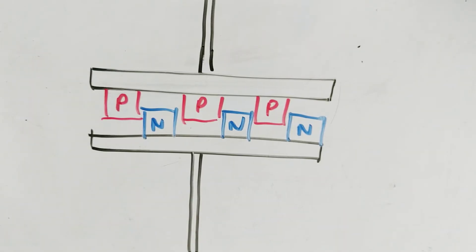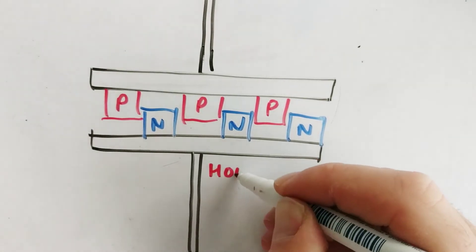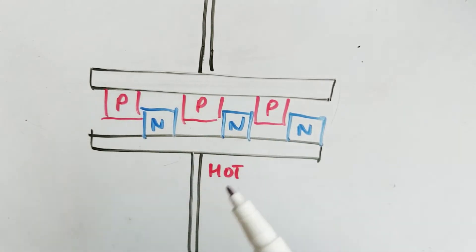And when this bottom part gets hot, it actually moves some of these electrons higher up in the energy levels within their atoms. And that makes them free or puts them in what we call the valence band of the atoms. And if they're free,